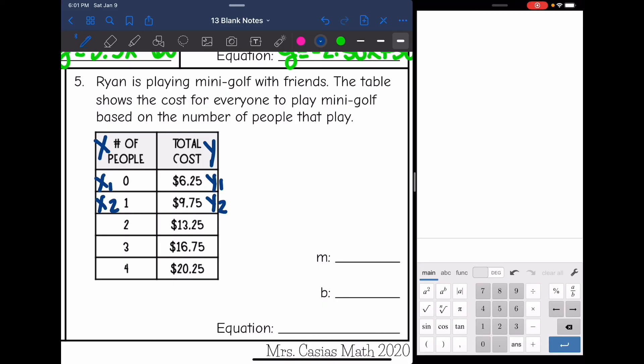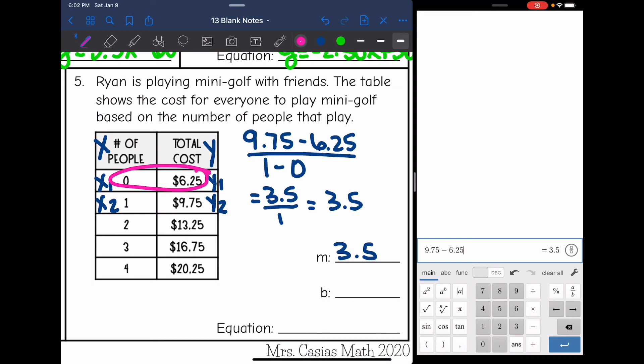So now I'm going to plug into my slope formula, and it'll be 9.75 minus 6.25 over x2 minus x1, which is 1 minus 0. 9.75 minus 6.25 is 3.5 over 1 minus 0 is 1. So that means my slope is 3.5. And then the y-intercept is where the x value is 0, which is in this table, and that is 6.25. So our equation is y equals 3.5x plus 6.25, which means there's a fee of $6.25 to play, and then it costs $3.50 per person to play.